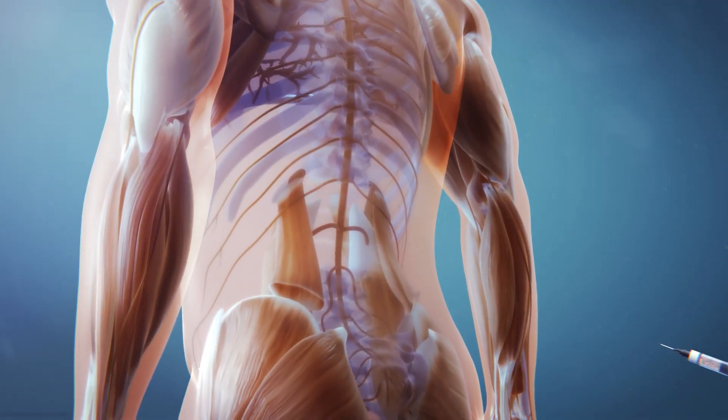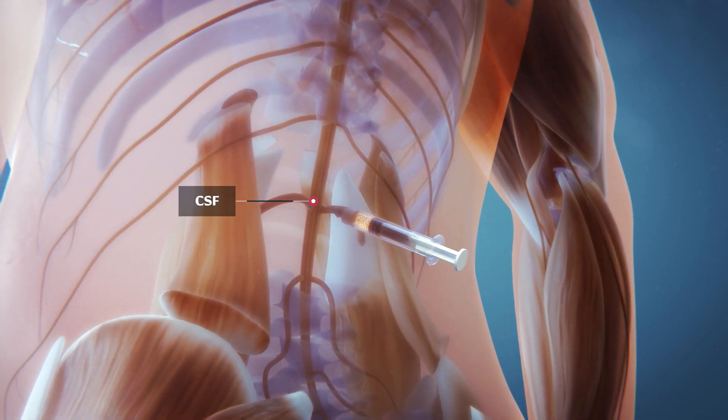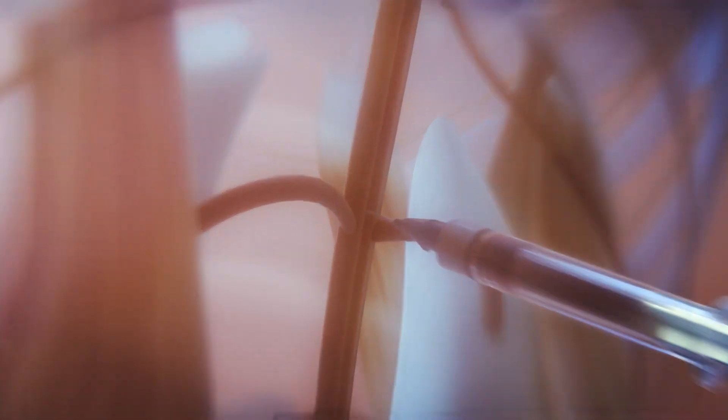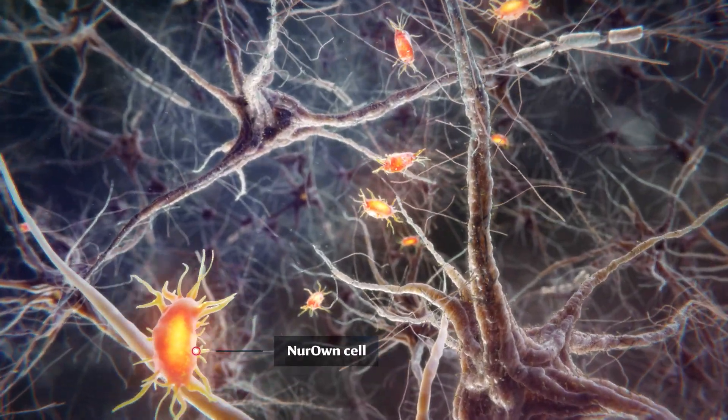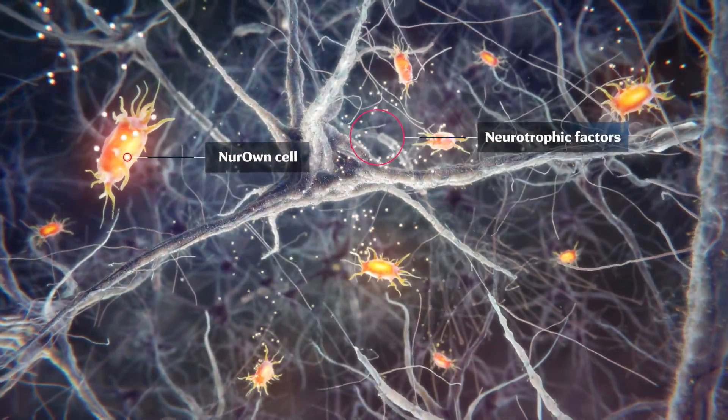A lumbar puncture delivers neuron cells back into the patient via the cerebrospinal fluid, CSF. The cells travel within the CSF throughout the brain and spinal cord to support nerve cells and dampen inflammation.